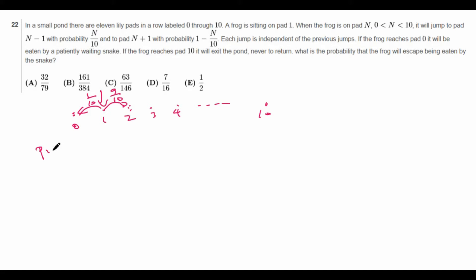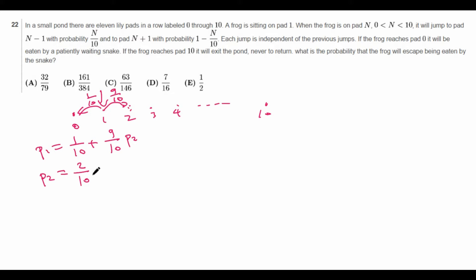So what is p1? Well, if we jump to the left with a probability of 1 tenth, then it will definitely get eaten by the snake. However, if we jump to the right with probability 9 tenths, then it will land on lily pad number 2, and the probability of getting to lily pad number 0 when it's on lily pad number 2 we'll call p2. So what is p2? It jumps to the left with probability 2 tenths, landing on lily pad number 1 with probability p1 of getting to 0. If it jumps to the right, it lands on lily pad 3 with probability p3 of getting to 0.